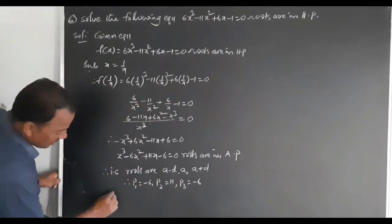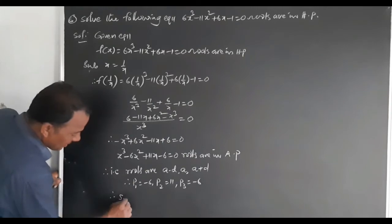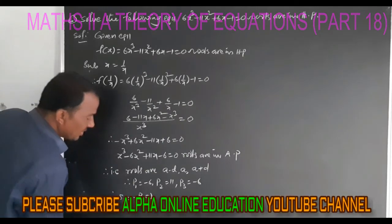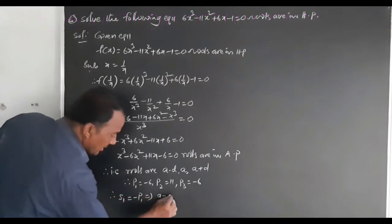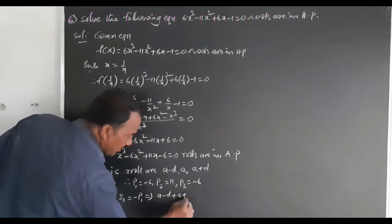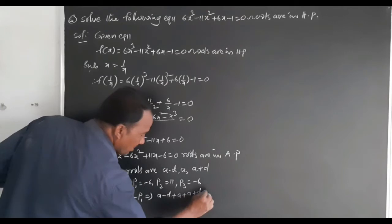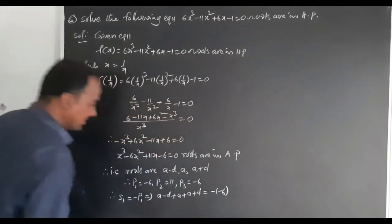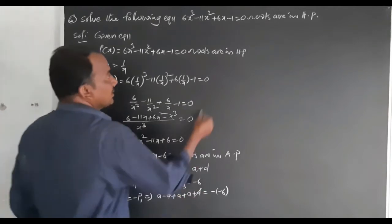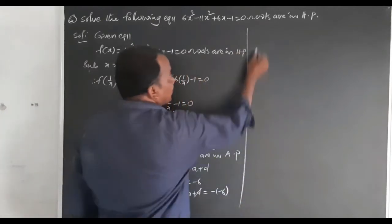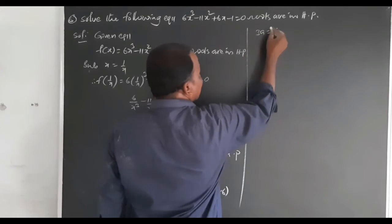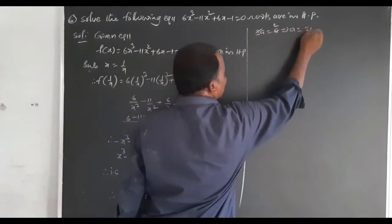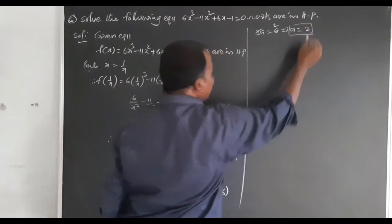First condition — sum of the roots: S1 equals minus P1. Sum means (a minus d) plus a plus (a plus d) equals minus P1 equals 6. The D terms cancel, giving 3a equals 6, therefore a equals 2.